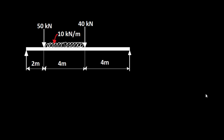This is a worked example for a problem in support reactions. You have a combination of point load and uniformly distributed load. As you can see in the figure, there are two point loads — 50 kN and 40 kN — acting at 2m and 6m from point A.